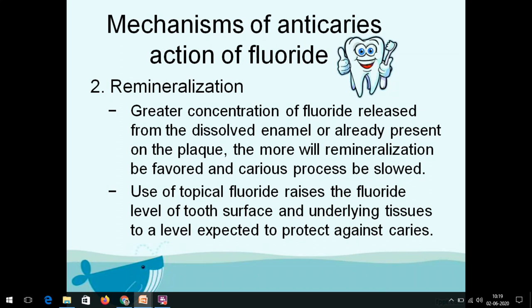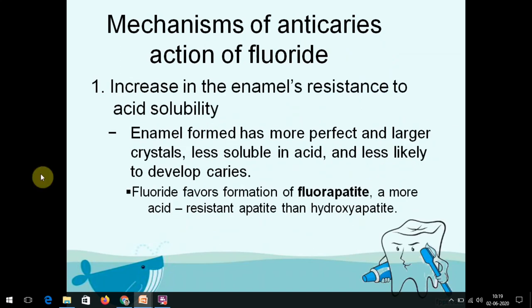The first mechanism is that fluoride increases the enamel's resistance to acid solubility, because it replaces the hydroxyl ion in the enamel lattice. The enamel lattice has a hexagonal shape with a central void where the hydroxyl ion is located. Since fluoride is highly electronegative, it replaces the hydroxyl ion — both being negative ions — fills the void present inside the enamel lattice, and makes it very resistant to acid attack.